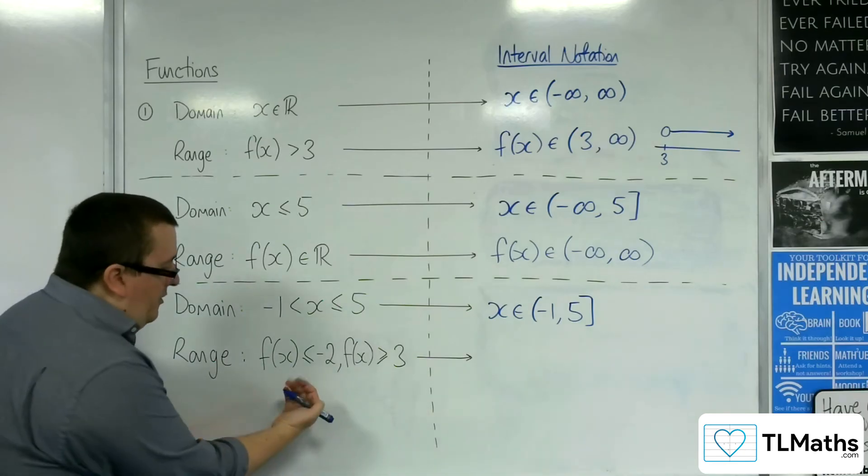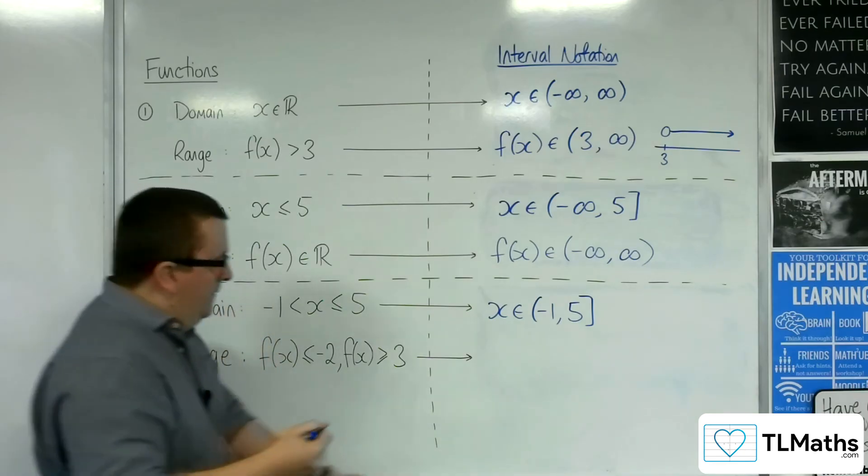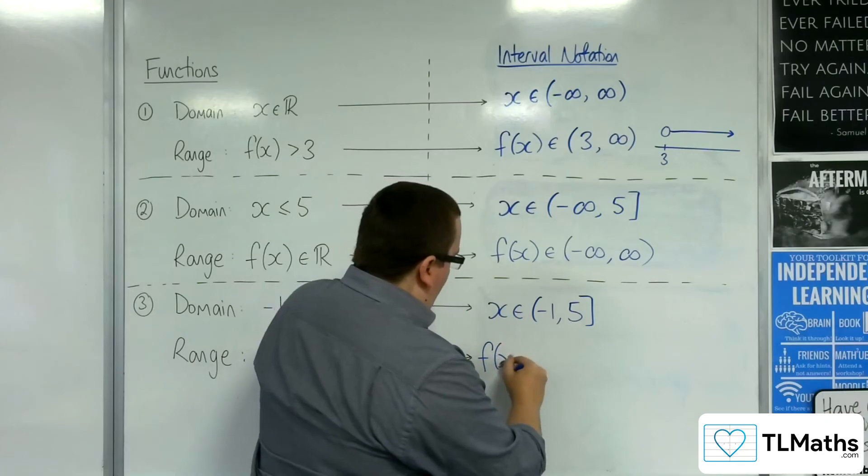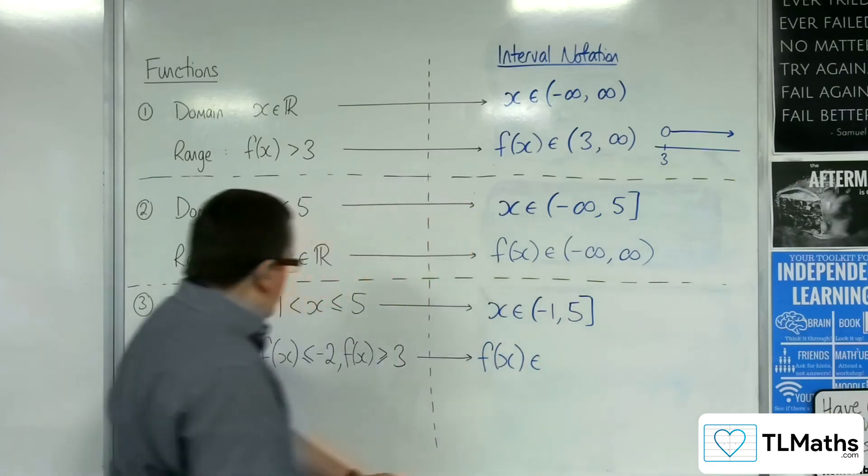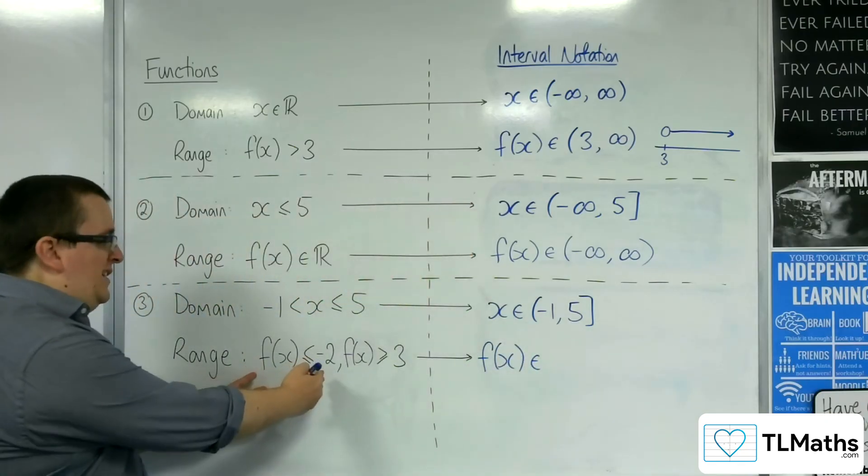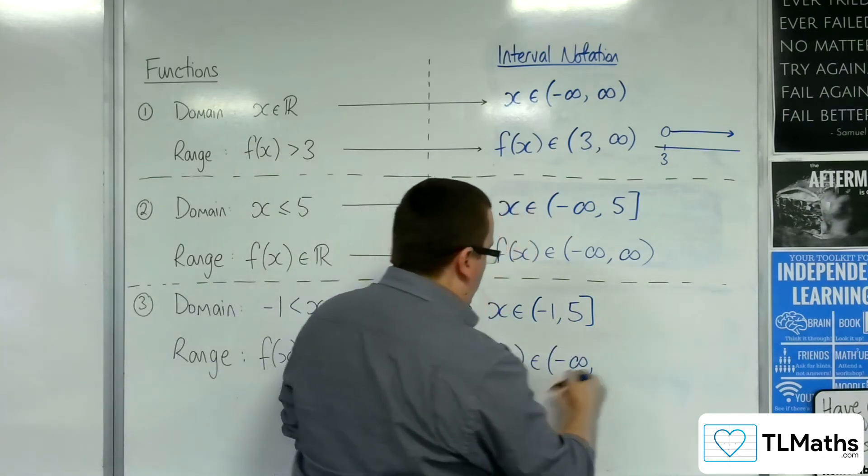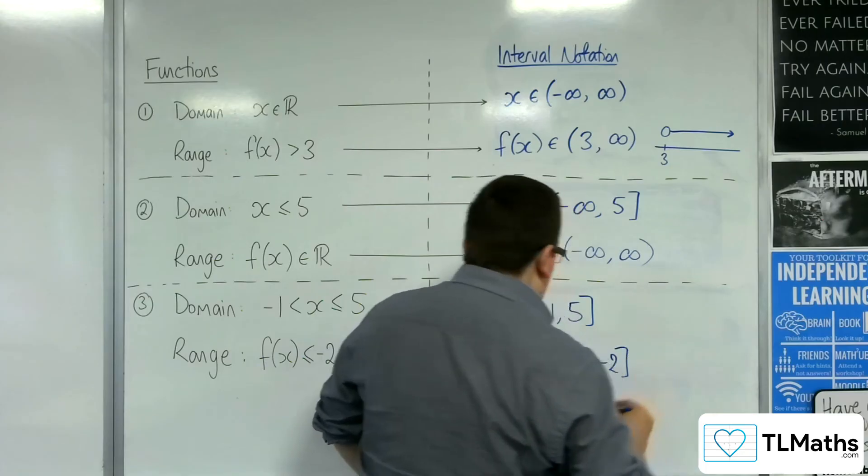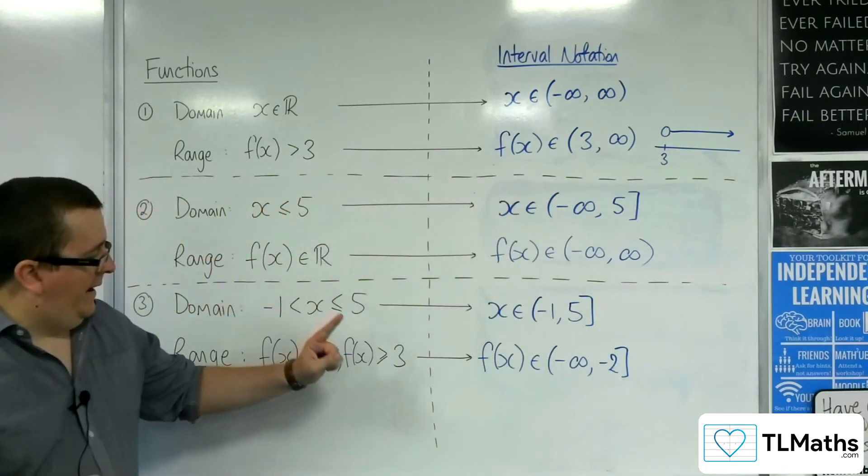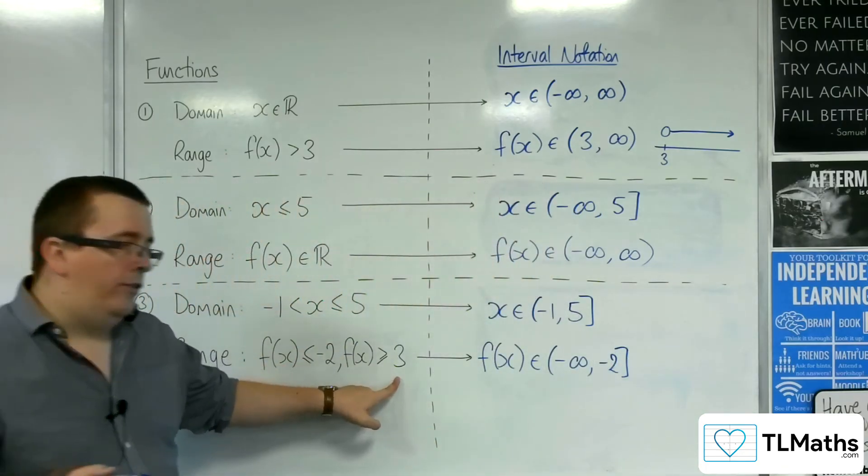However, when we get to this example here, I've got to say, well, f of x belongs to, well, I'm less than or equal to minus 2. So, that's minus infinity, curved bracket, up to minus 2, square bracket.